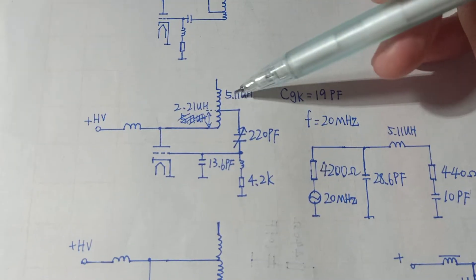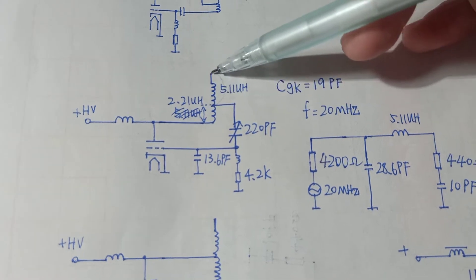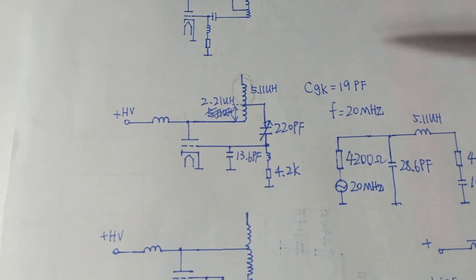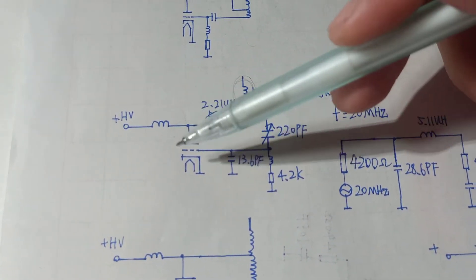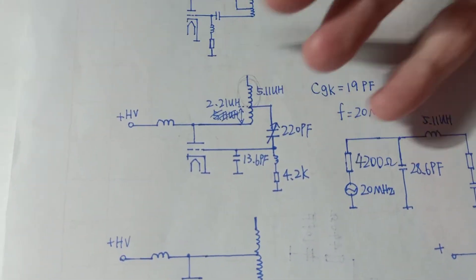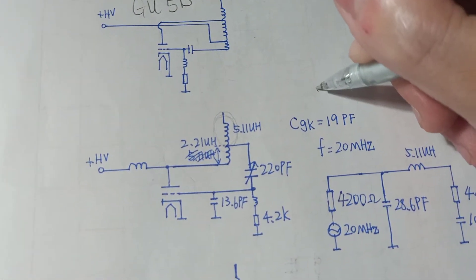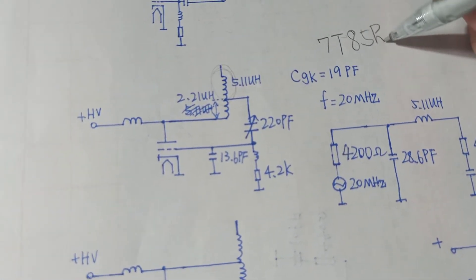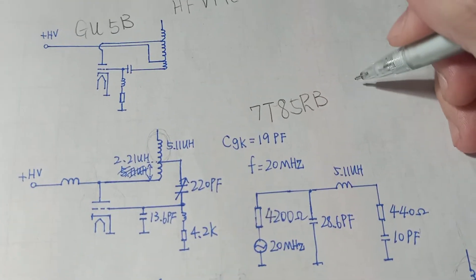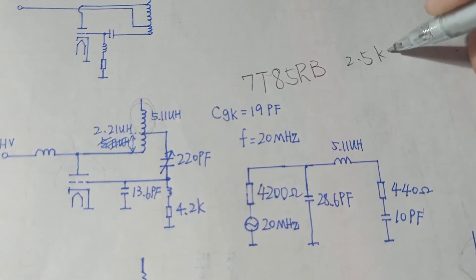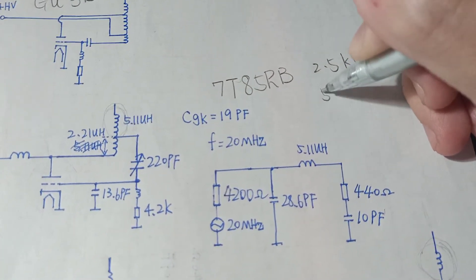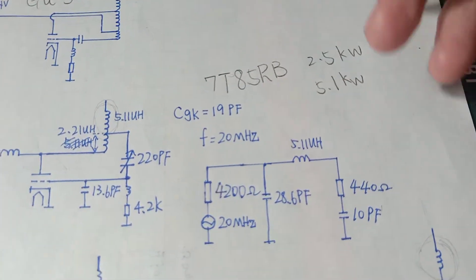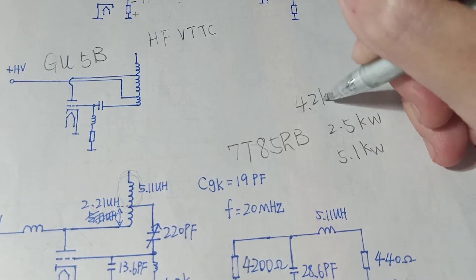This is the breakout point. That makes me add a matching coil here. I did some calculations. Then I found that in my circuit, this triode is actually a Japanese-made 7T85RB triode, which has a plate dissipation at 2.5kW and output RF power 5.1kW.